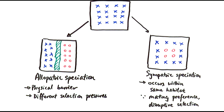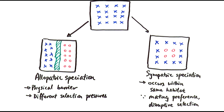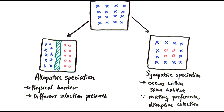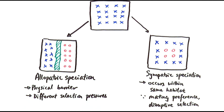So there you have it — those are the two different types of speciation. As a quick recap: allopatric speciation is where a population of the same species has been separated by a physical barrier. In the two different habitats they would be subjected to different selection pressures, meaning different alleles would be selected. If they carry on over many generations of reproducing, all the changes accumulate to the point where they become two completely different species that cannot interbreed.